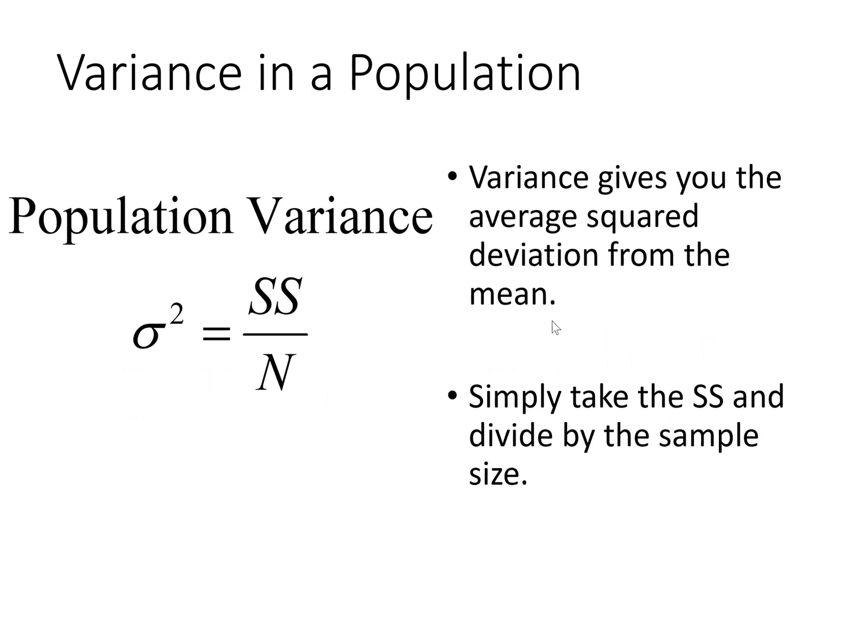Alright, so variance in the population is symbolized by the lowercase Greek letter sigma squared, and it is calculated by simply taking the sum of the squared deviations from the mean and dividing it by n. So it's basically the average squared deviation from the mean. So it's a useful measure of variability, except that it's in squared units still.